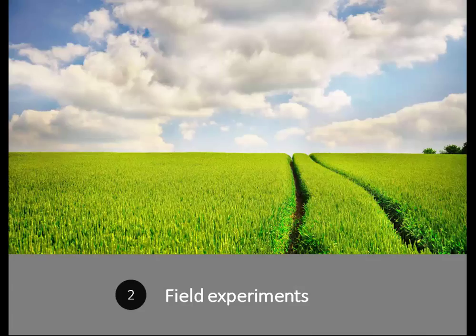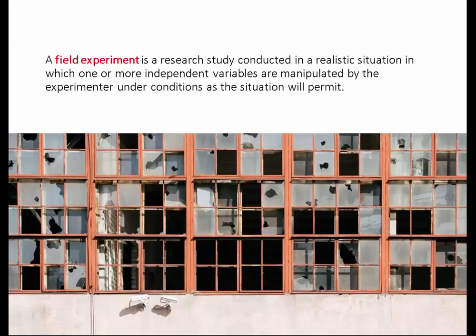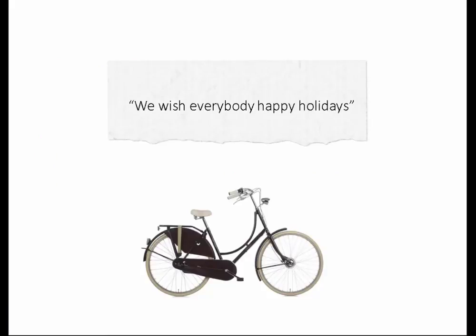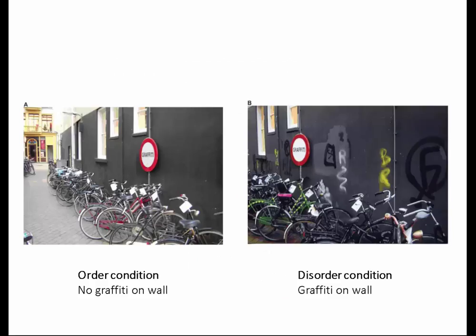Field experiments are research studies conducted in realistic situations in which one or more independent variables are manipulated by the experimenter. The example I talked about on Monday — the flyer attached to a bike on a real street in Groningen with real bikes and real people — that's a field experiment. The graffiti was the stimulus, the treatment that was administered. You can see how the researcher is less in control — other things could happen that they can't control.